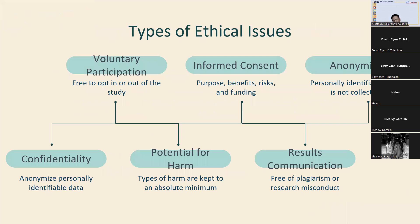There are six types of ethical issues. First is voluntary participation: your participants are free to opt in or out of the study at any point in time. All research participants are free to choose to participate without any pressure or coercion, and are able to withdraw from the study at any point without feeling an obligation to continue. Participants don't need to provide a reason for leaving, and it is very important to make clear that there are no negative consequences or repercussions to their refusal to participate.